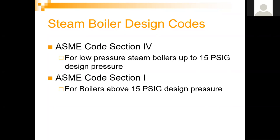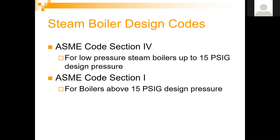ASME Code Section 1 is for all steam boilers above that design pressure. It's much more stringent on the NDE — non-destructive examination — required, including x-raying of welds and other non-destructive examination, as well as all the boiler valves and other codes. Anything with a relief valve set point or design pressure above 15 PSI falls into ASME Code Section 1 of the pressure vessel code.